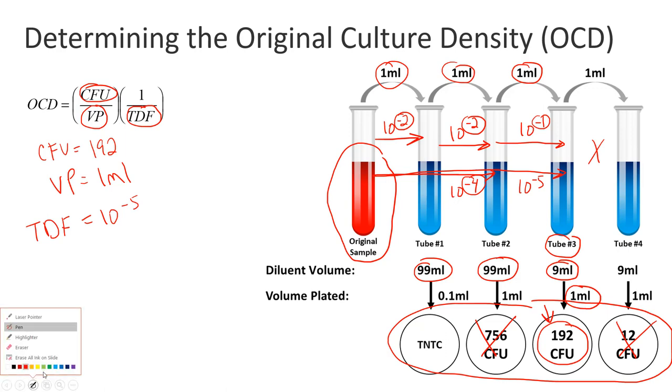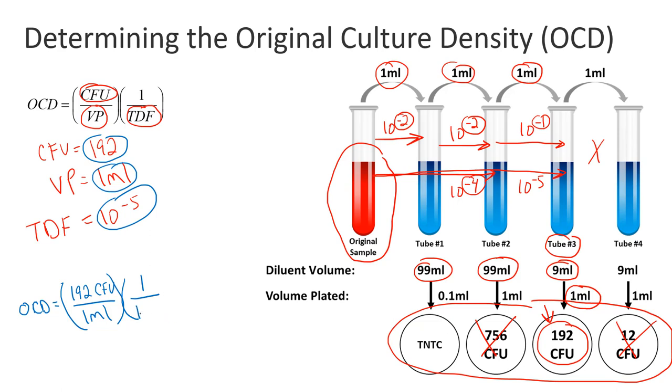Now we need to plug in our numbers and do the math. We have OCD equals the CFUs. Here's our CFUs: 192 CFUs. Volume plated: 1 ml over 1 ml.